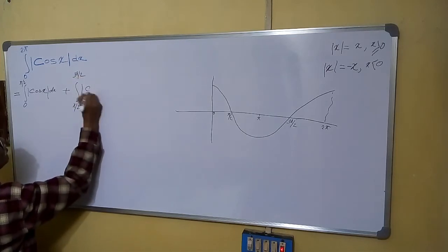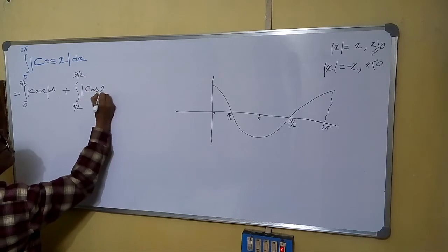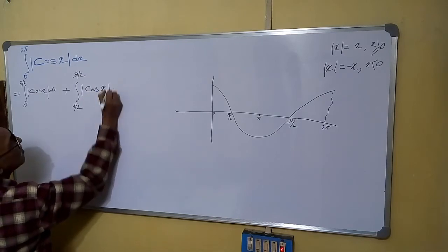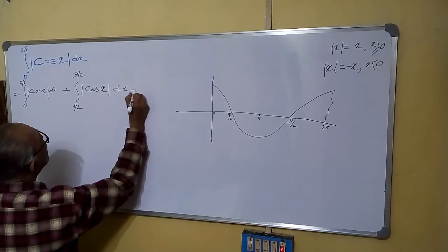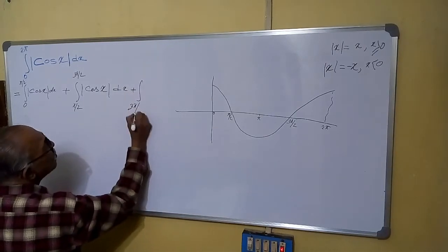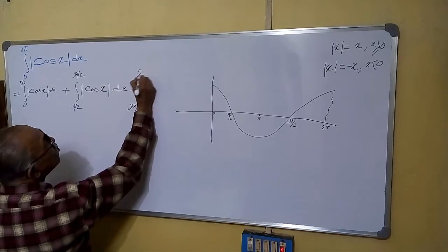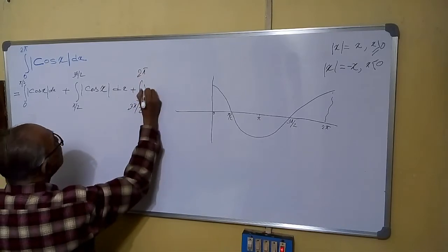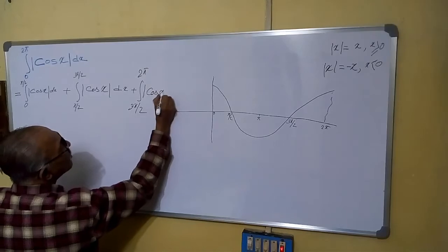Plus, 3 pi by 2 to 2 pi, again mod of cos x dx.